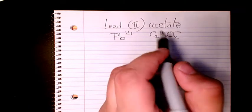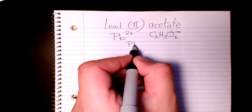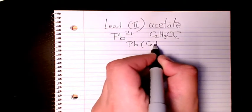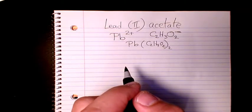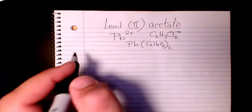So that makes it as Pb(C2H3O2)2. That's the molecular formula for lead (II) acetate.